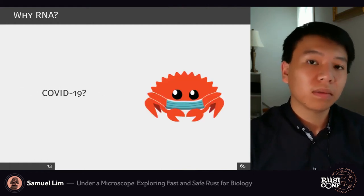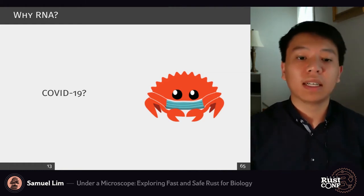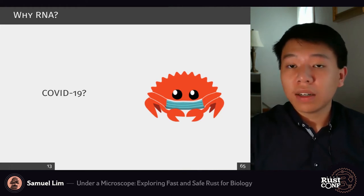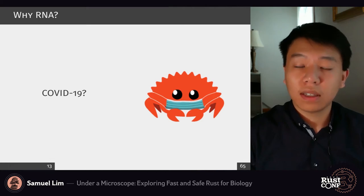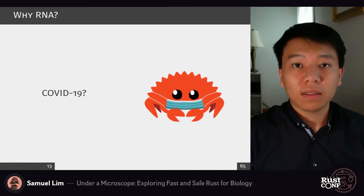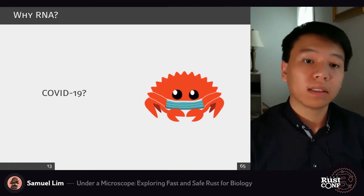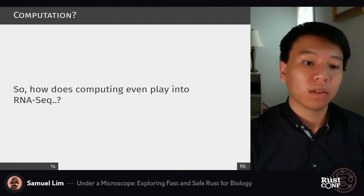As many of you have probably been affected by COVID-19: COVID-19 is an RNA virus, which means the virus's entire genetic sequence is contained in its capsule, and its information format is RNA. So we've looked at how RNA comes to be, why it's important, and how sequencing plays into that.